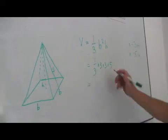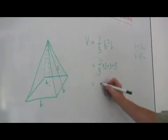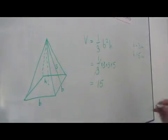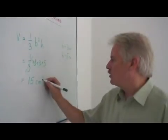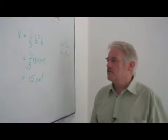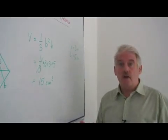So here we are, the volume: one third times three, that cancels, three times five is fifteen, and of course this is a volume, so it's going to be centimeters cubed. So fifteen centimeters cubed is the result. So this is how you would work out the volume of a square pyramid.